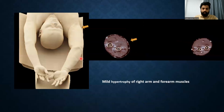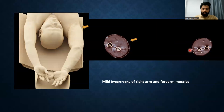On this image, we can see there is a mild hypertrophy involving the right upper arm and forearm. The mild hypertrophy of the right arm and forearm muscles are also noted. Also, we can see the visualized radius and ulna, which appear to be larger as compared to that on the left side.